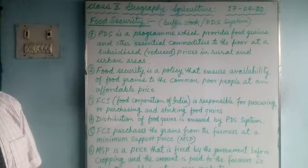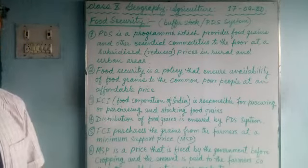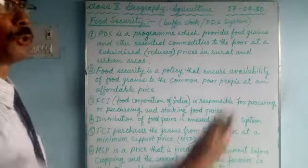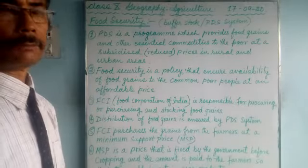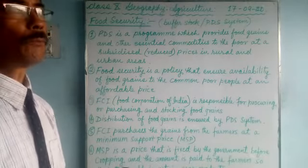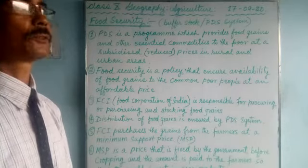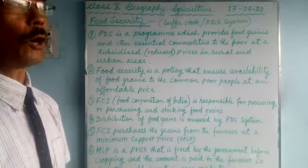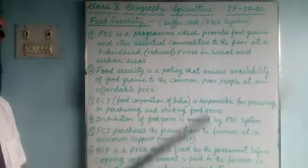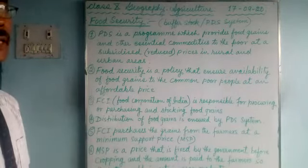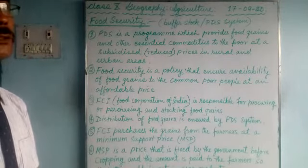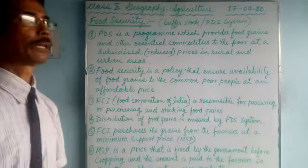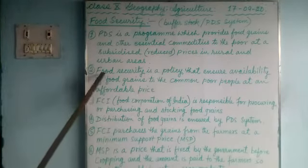Because most of the people in rural and urban areas are poor, many could not afford to purchase food grains in the market because the market price is very high. So the government helps them through the PDS system so that they can get food grains and other essential commodities for their survival at a subsidized, reduced price.